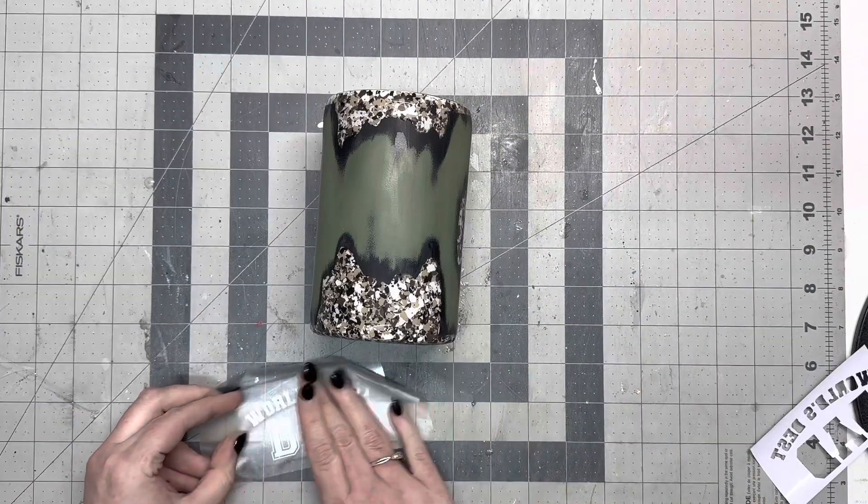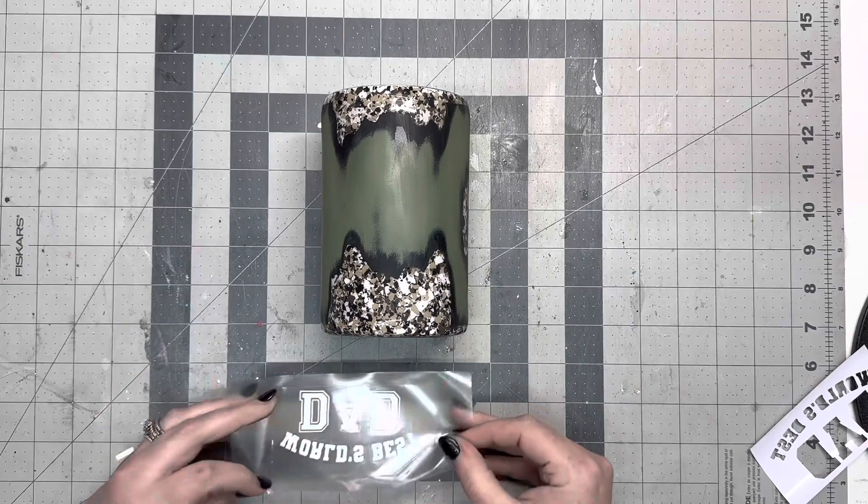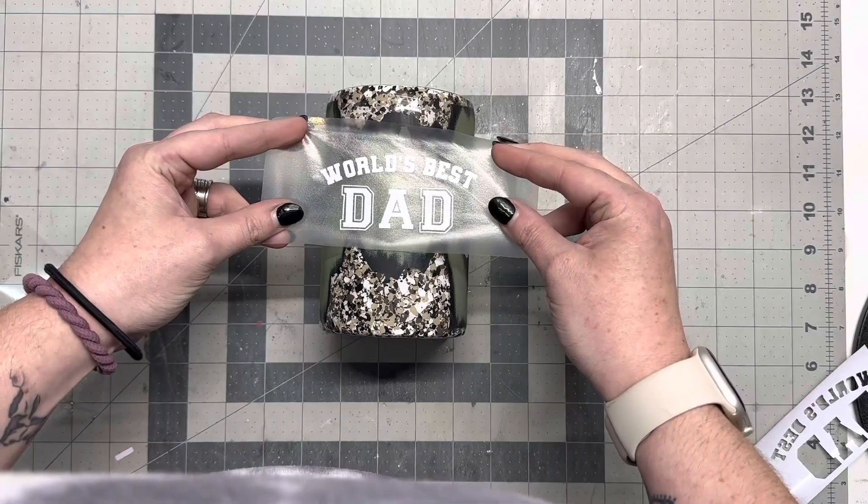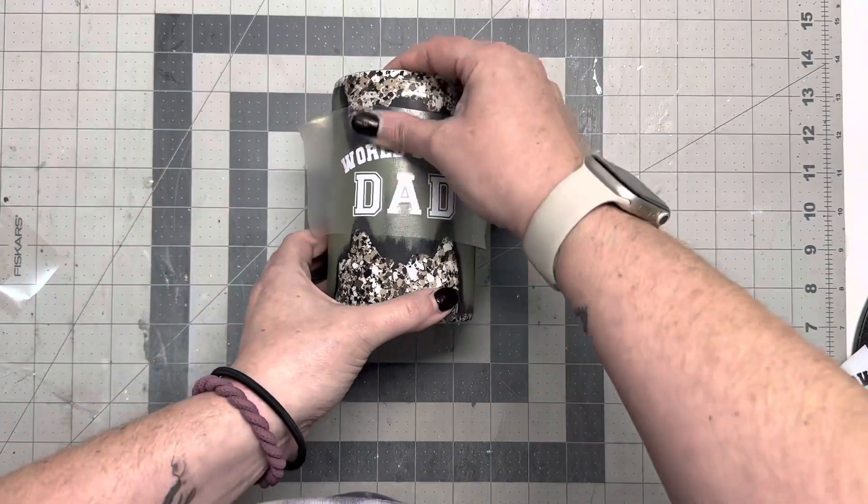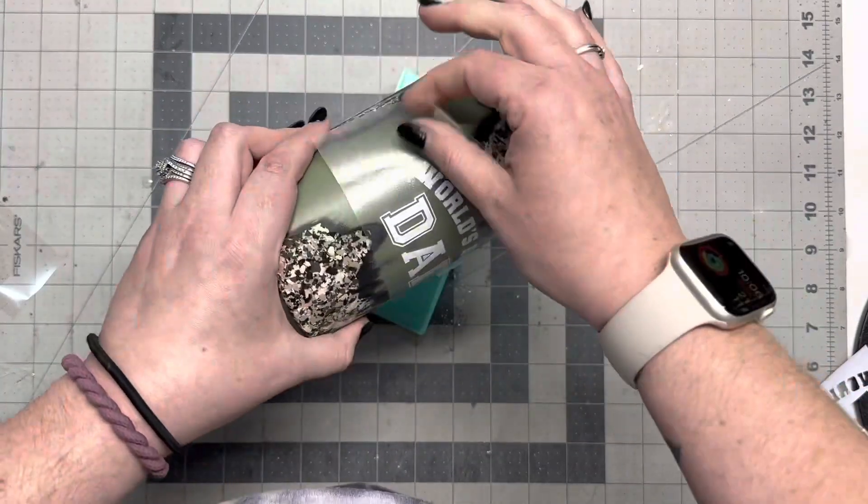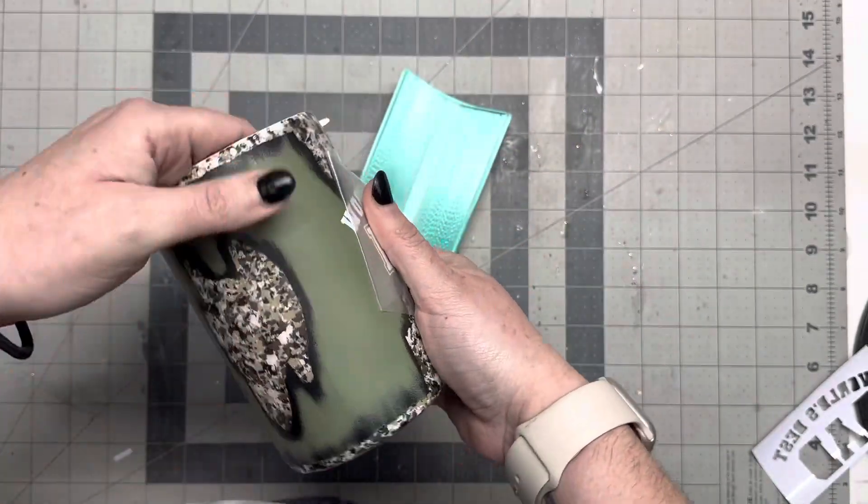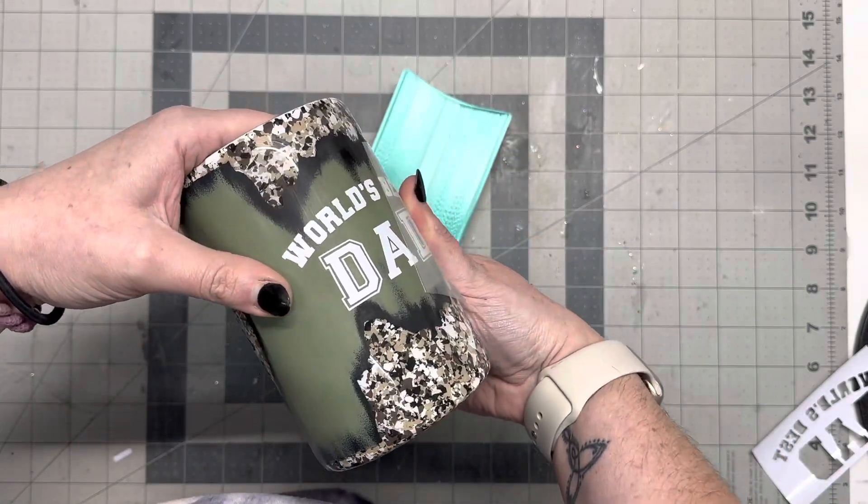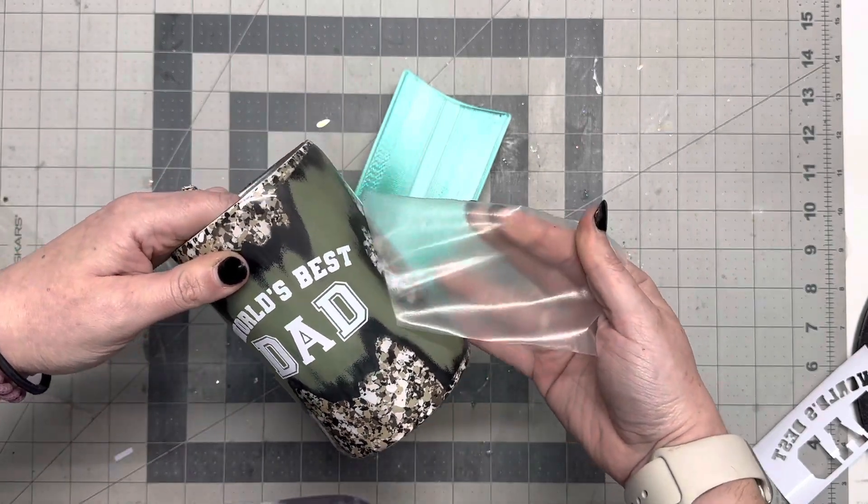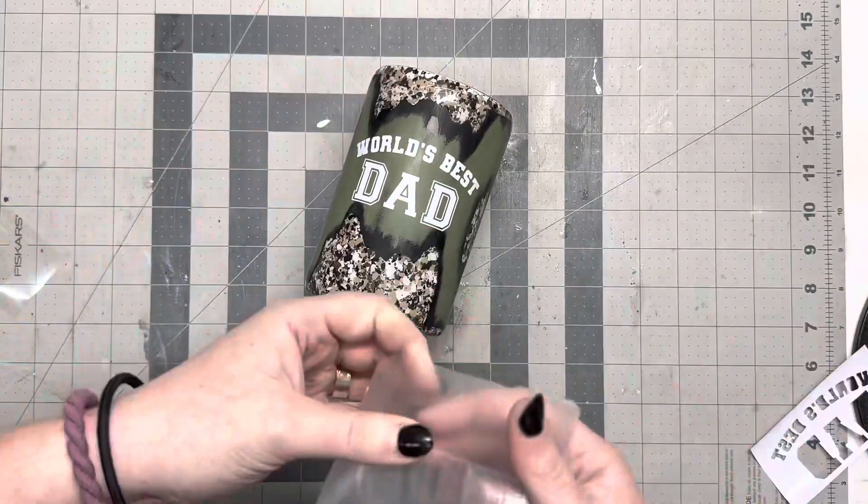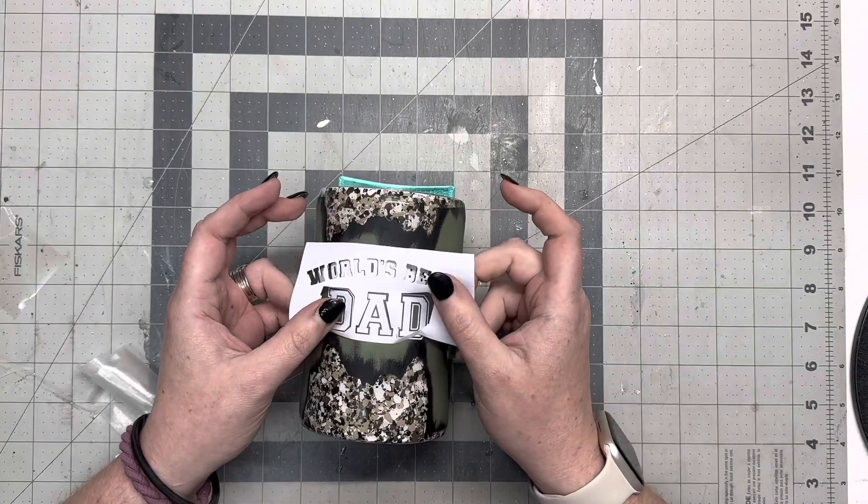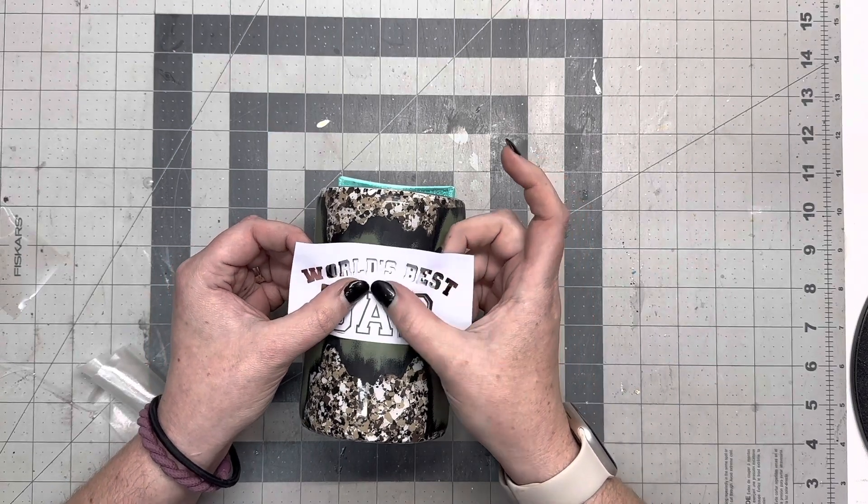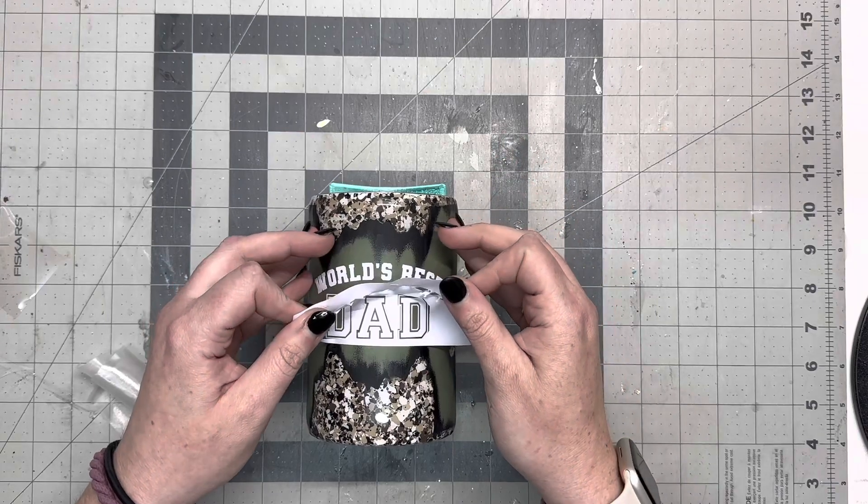I cut this decal out that I found on Etsy at three and a half inches. Because this is not epoxied, we're applying this directly to spray paint that's not sealed. When I applied it and removed the transfer tape, I made sure to pull the transfer tape flat to my tumbler. I didn't want to pull it away from the tumbler because then you're going to chance pulling that paint up. If you're kind of laying it flat and then pulling it back on the tumbler, you have way less chance of exposing that paint or pulling that paint and then ruining your cup.